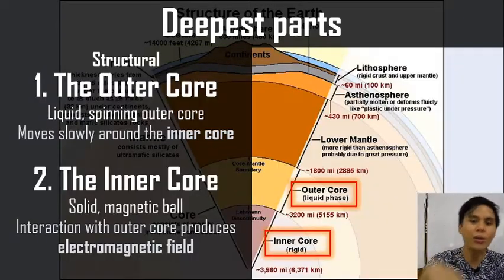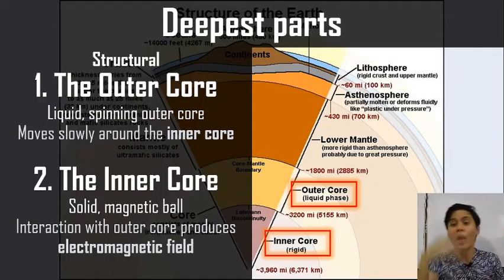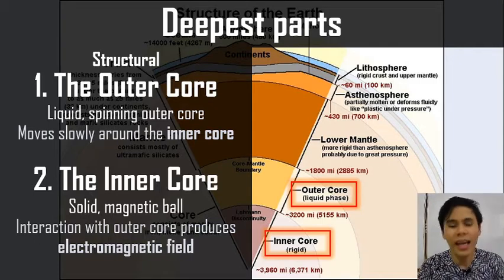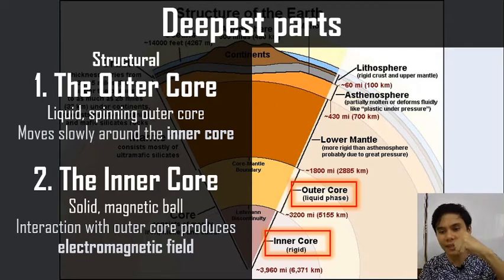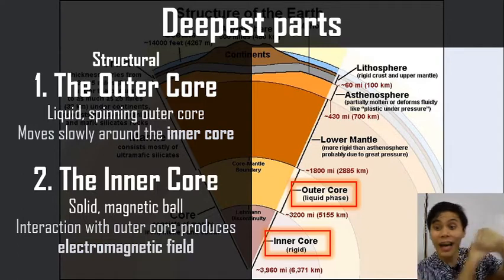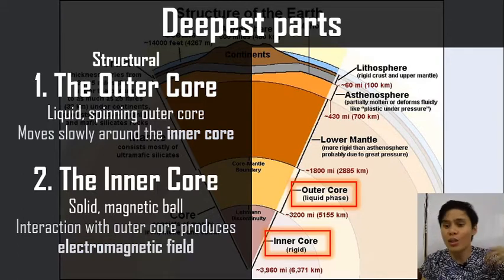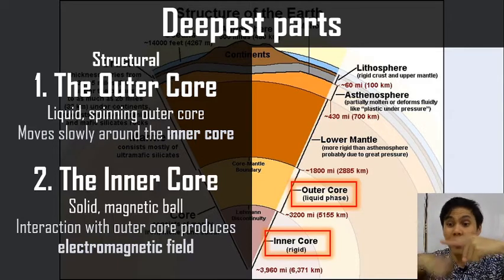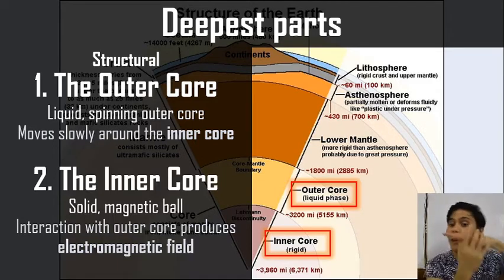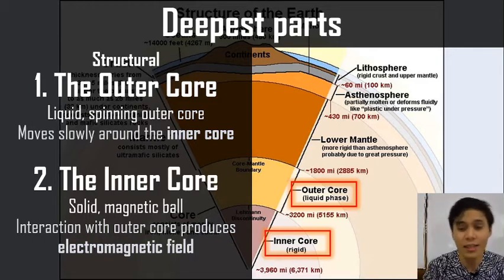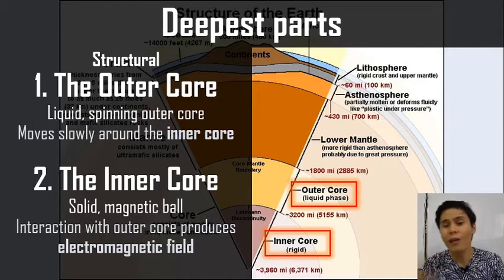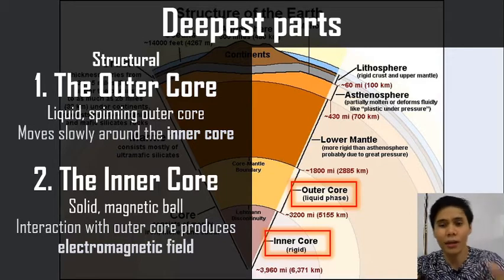Because the solid inner core is magnetic, and so is the liquid outer core which spins around the inner core, we have an electromagnetic system. Just like a solid iron nail with wire and electricity flowing through it becomes an electromagnet, the Earth is a giant electromagnet. That gives us our electromagnetic field, which protects us from radiation such as solar radiation.